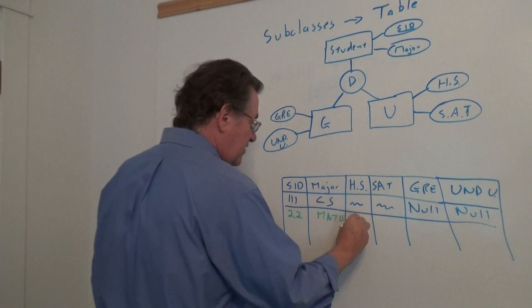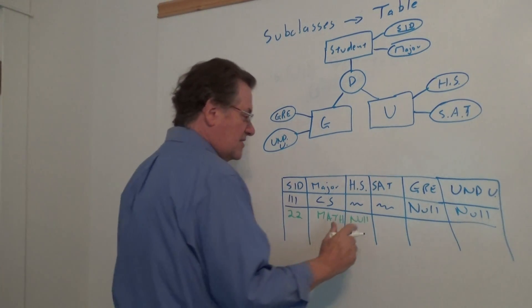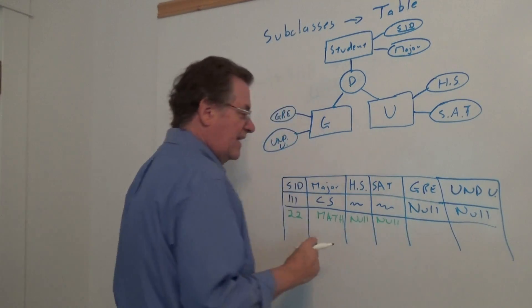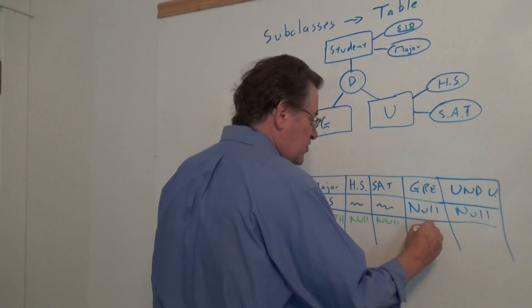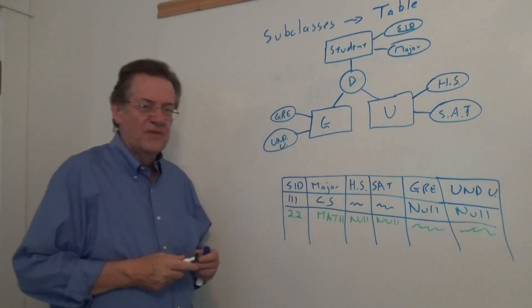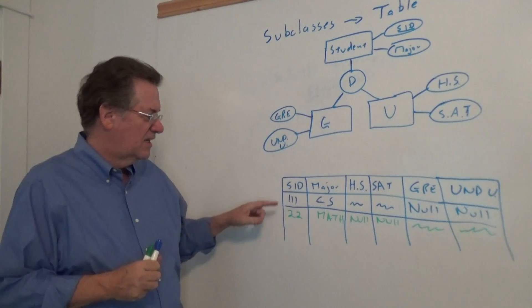We're going to assume they'd have a null value because we don't care about the high school. And we'd assume a null value for the SAT score. But the GRE, we would have something, and the undergraduate, we would have something.